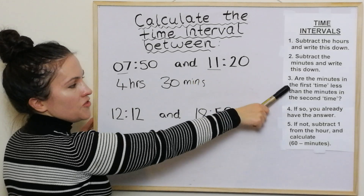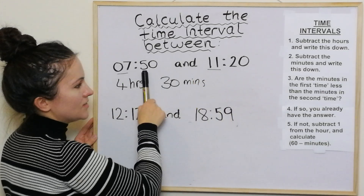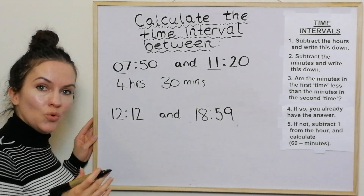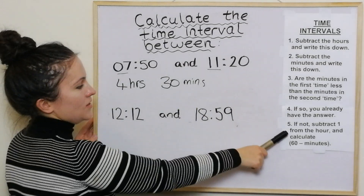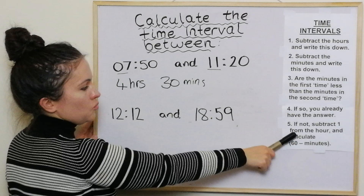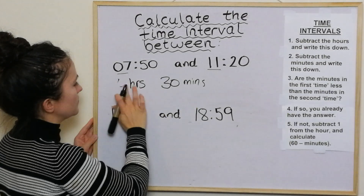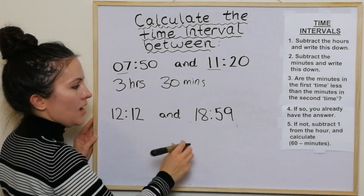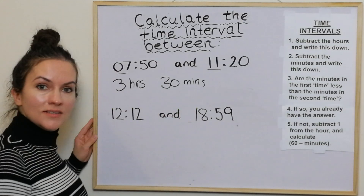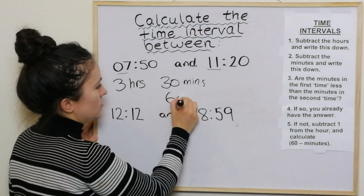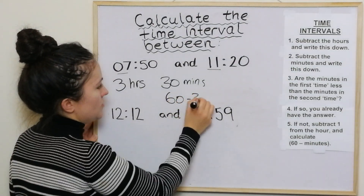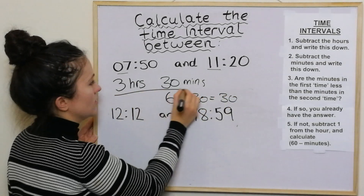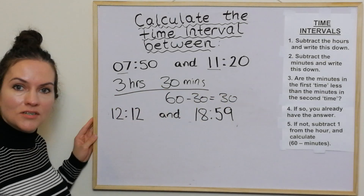Then it asks: are the minutes in the first time less than the minutes in the second time? The answer is no, so we go to step 5 — subtract 1 from the hour, so that becomes 3. Then calculate 60 take away 30, which is just 30. So the answer is 3 hours and 30 minutes.